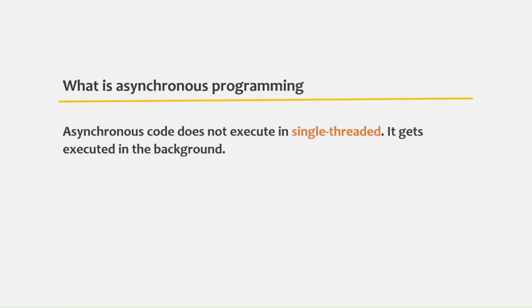This is where asynchronous programming comes into picture. JavaScript is a single-threaded programming language, and asynchronous code does not get executed in that single thread. Instead, it gets executed in the background, and that's why it does not block the main thread. So an asynchronous code is non-blocking. When we make an HTTP request asynchronously, it runs in the background, and the next code after the HTTP request will be executed immediately in the main thread.